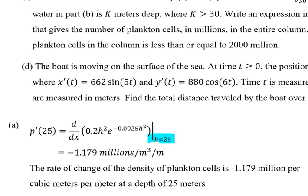This is the written solution for part (a). By plugging into the calculator d/dx of the equation provided when h equals 25, we can get the value of p'(25), which is negative 1.179 millions per meter cubed per meter.